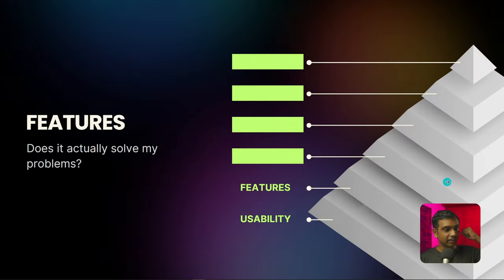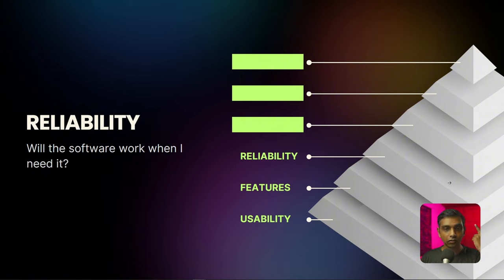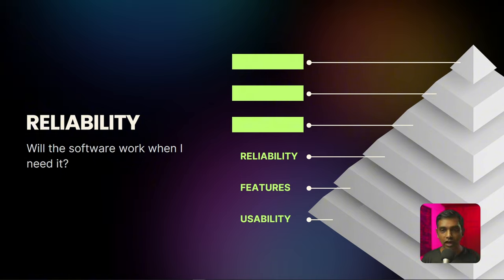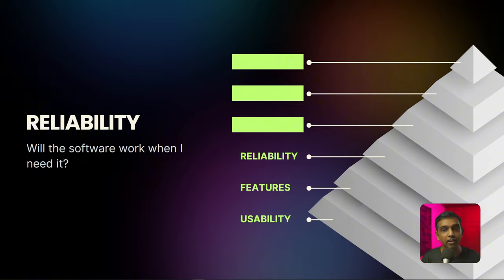Now let's look at the next level of the pyramid: reliability. As I continued evaluating what users wanted from software, reliability emerged as the next critical factor. Once they could use the software and it had the features to solve their problems, the next question people would ask is: will the software work for me when I need it? Users want the confidence that the software will work all the time. This builds trust, which is crucial for long-term loyalty.